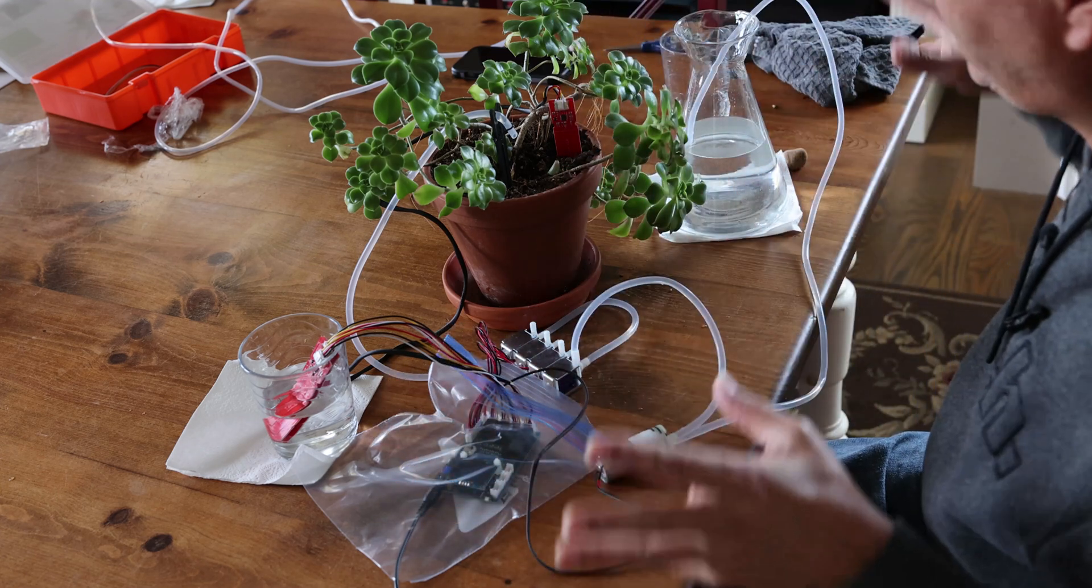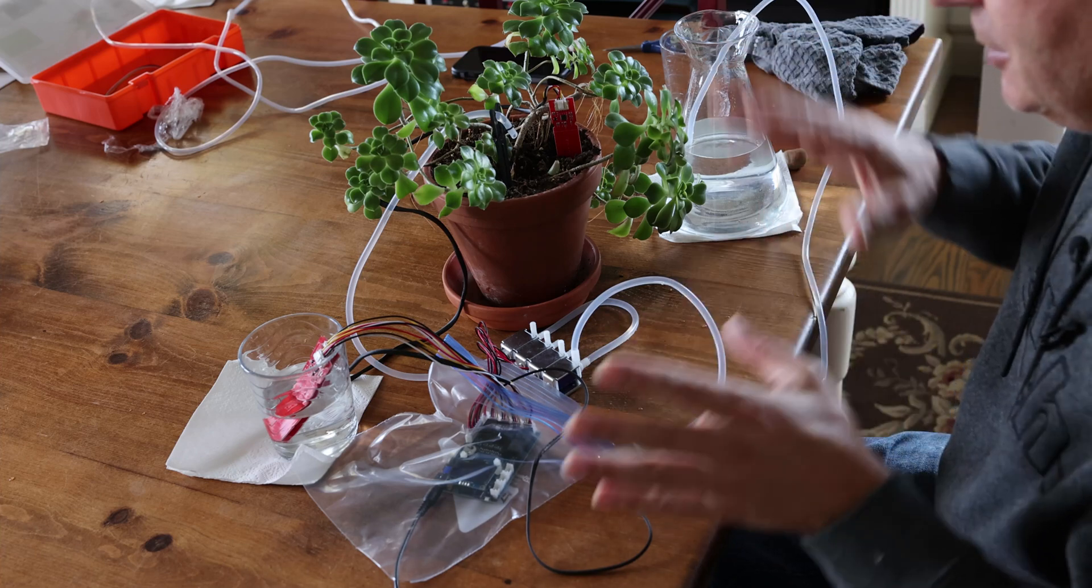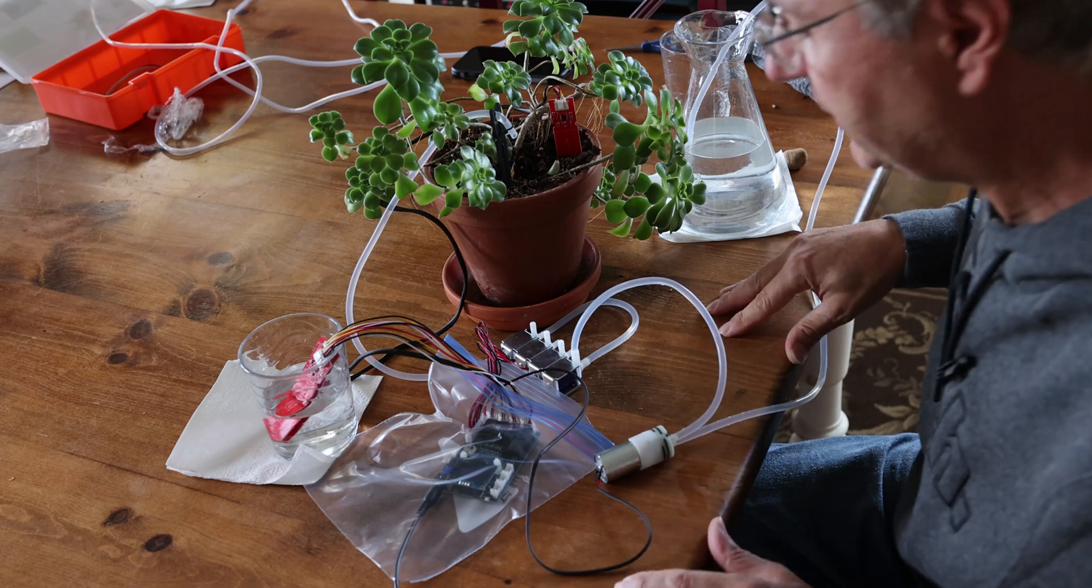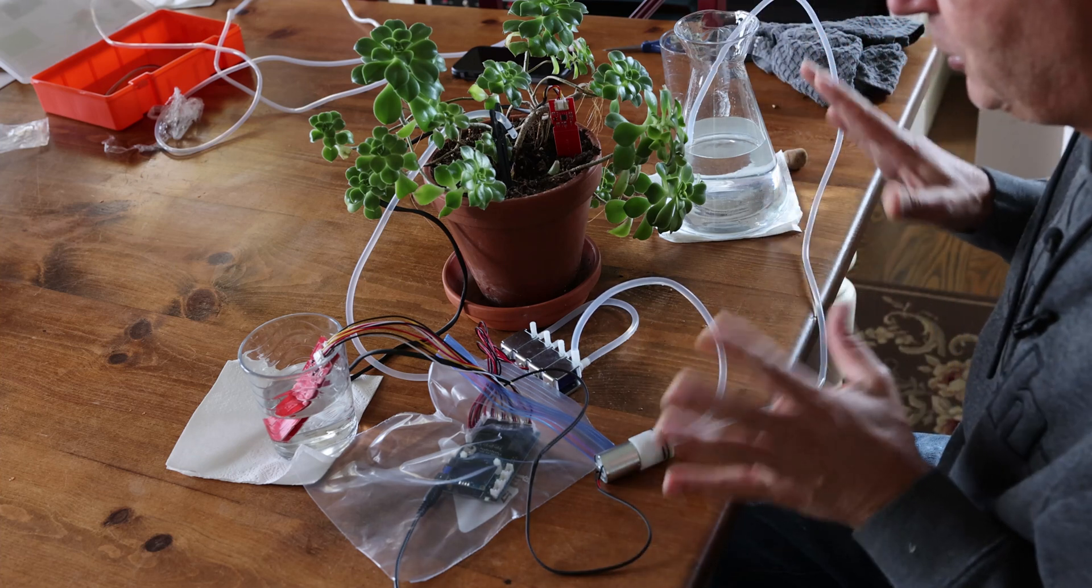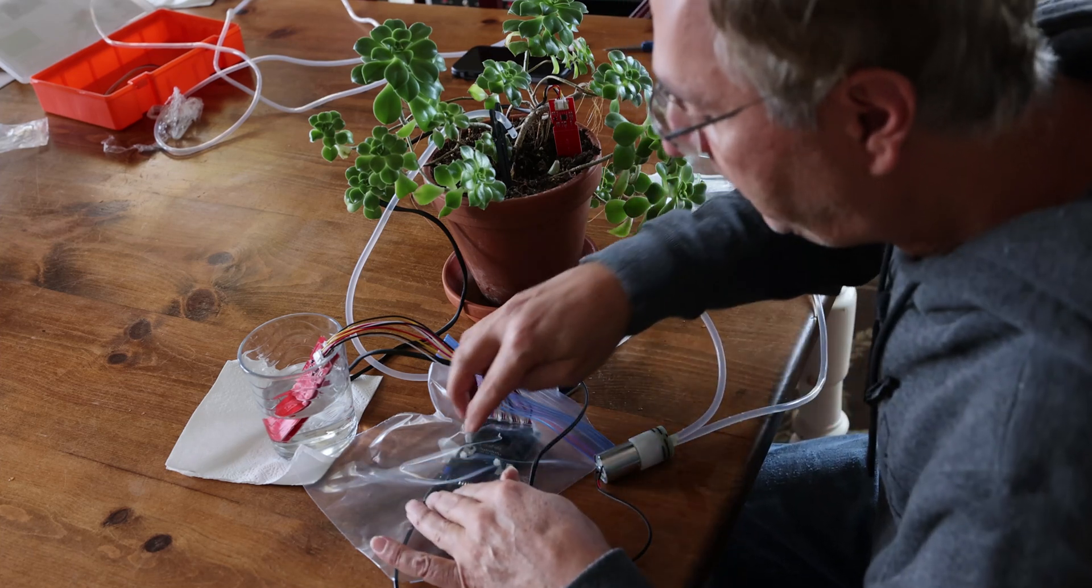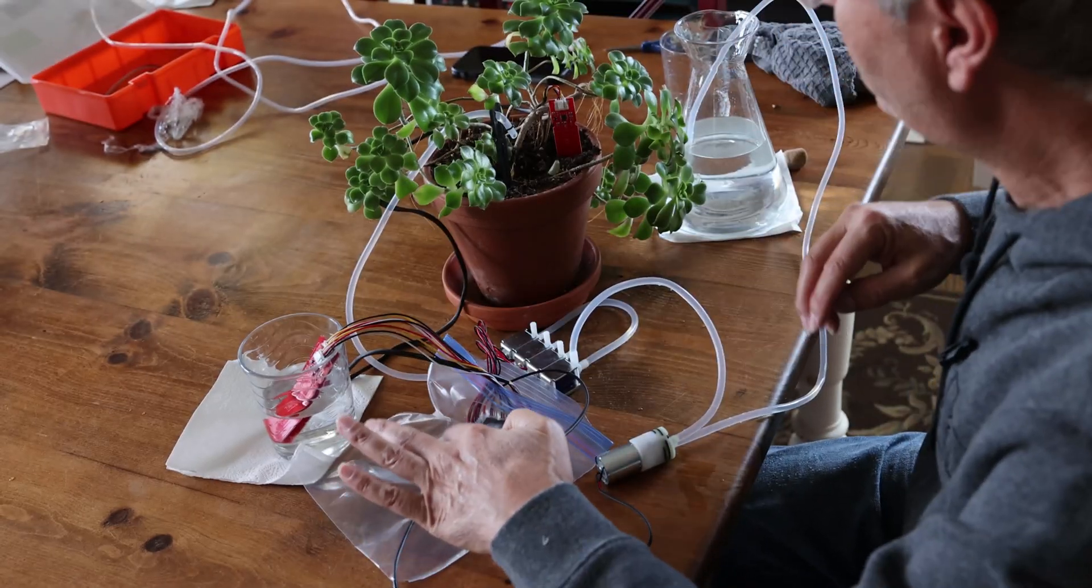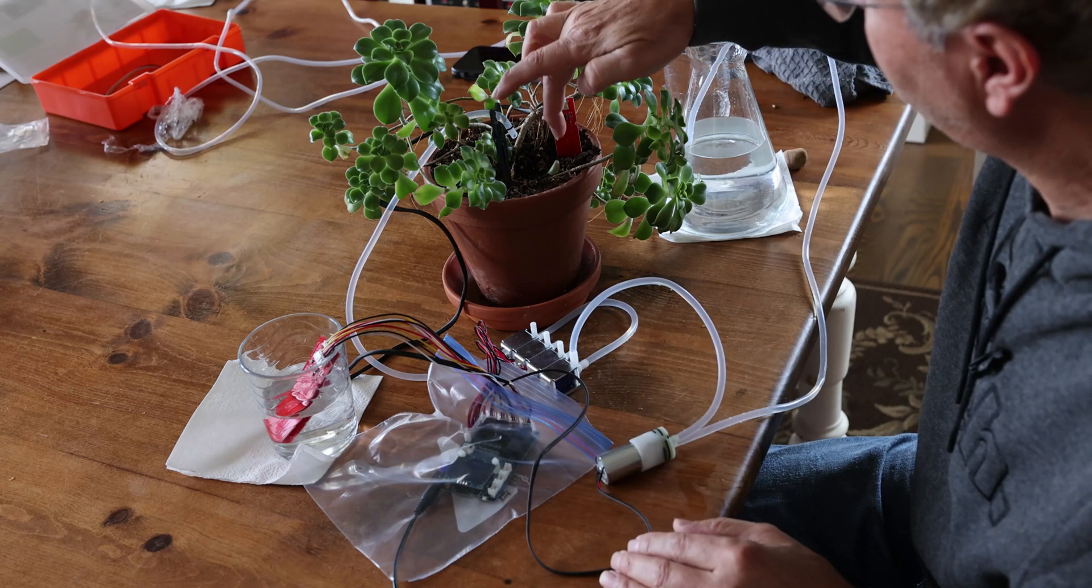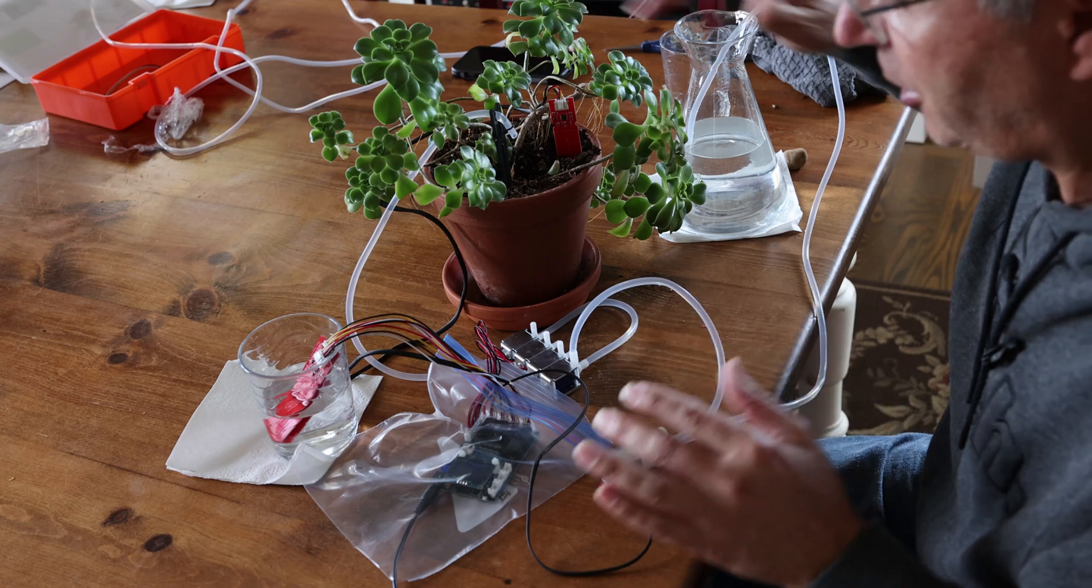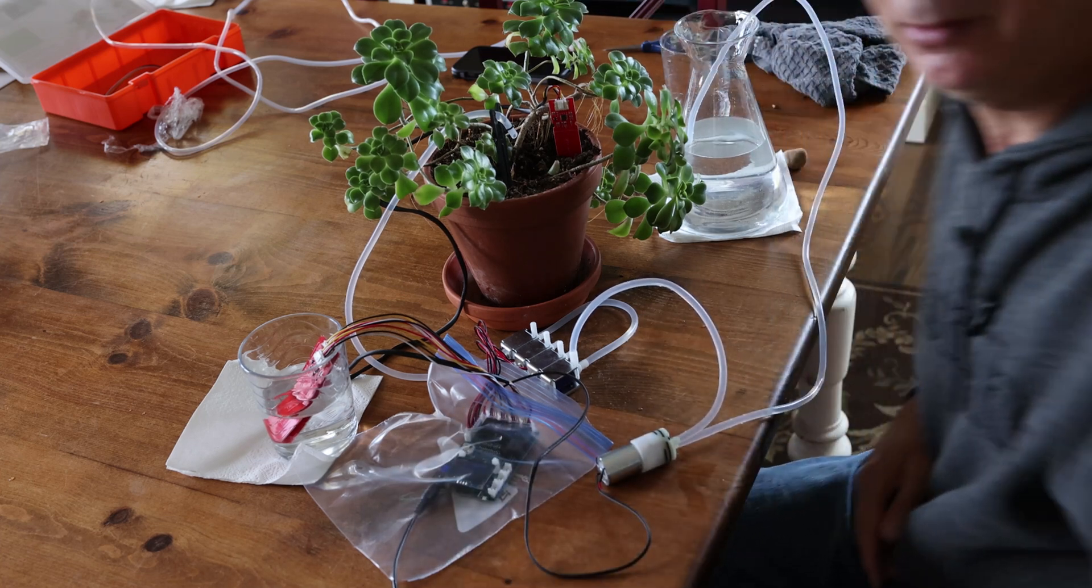Once you have everything set up in the real world, you can start making a little box for it and try to hide all the little connectors. But for the sake of showing you guys how the system works, it's kind of nice to have it all exposed. I'm going to power the board, and as soon as I power it we should see the water come out. As soon as the plant has enough water, it should stop.